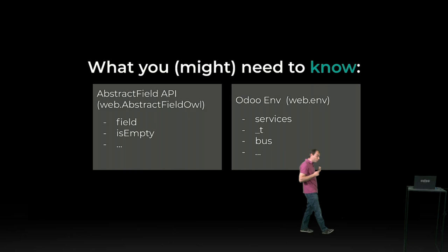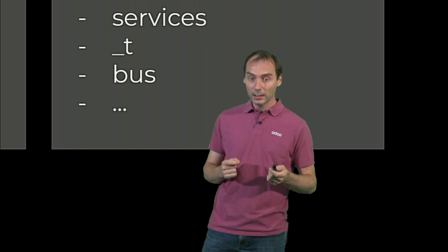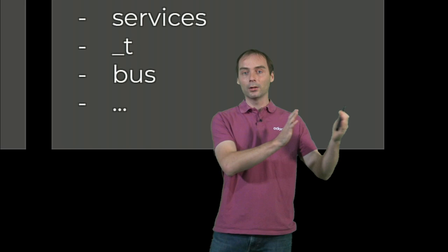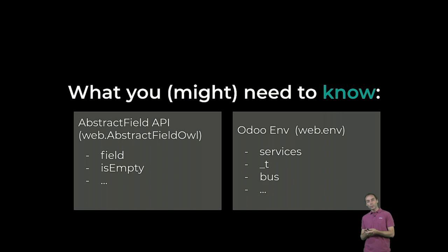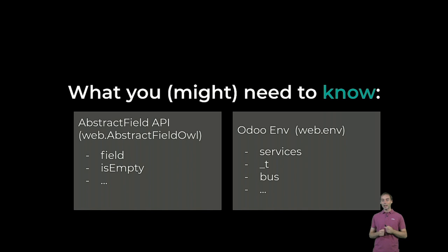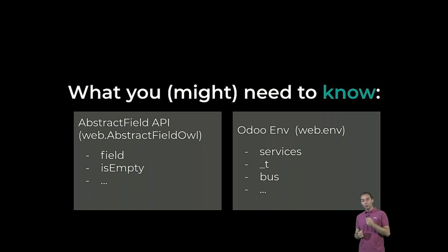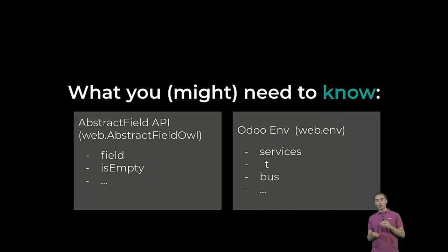Sadly, we have not refactored the widget system again yet. The abstract field OWL is a one-to-one translation from the abstract field API. In the future, we will use props to configure the widget, but for now check the source code of abstract field OWL — it's documented specifically to explain how it should be used. Also, Odoo has a special OWL environment containing useful tools: the underscore-T translation function, the core bus, and additional services. You should use those services instead of importing them yourself to make your code more robust.